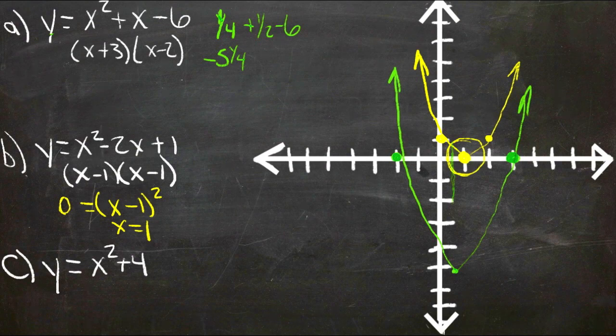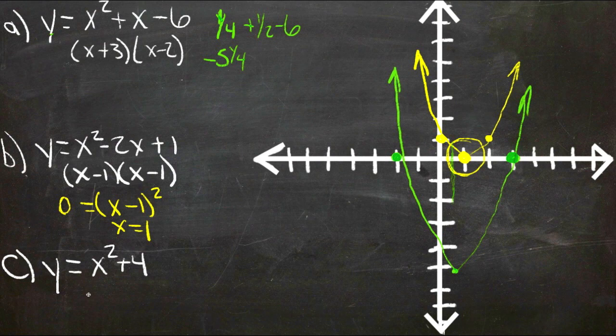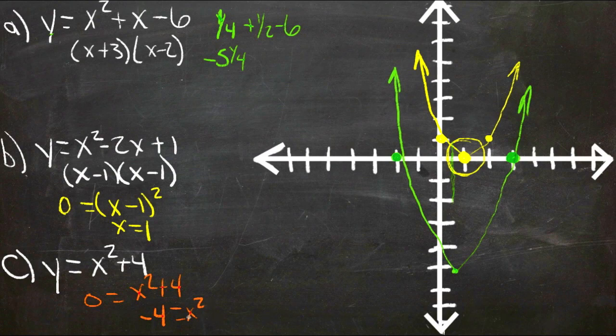And then our last example here. We have y equals x squared plus 4. Well if y is 0, then we end up with x squared plus 4 equals 0, which is the same as saying negative 4 equals x squared. And there are no solutions that will do that. There are no numbers that you can square to get a negative answer. So there aren't going to be any x-intercepts at all.